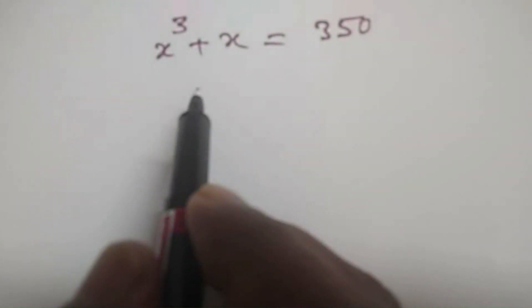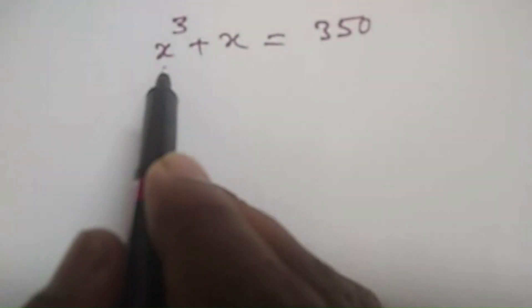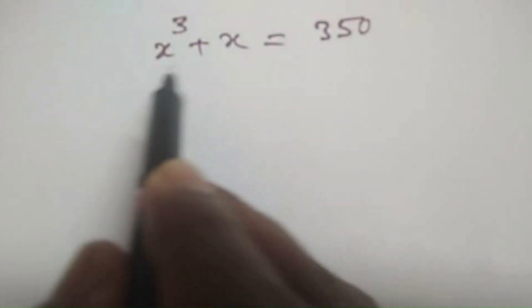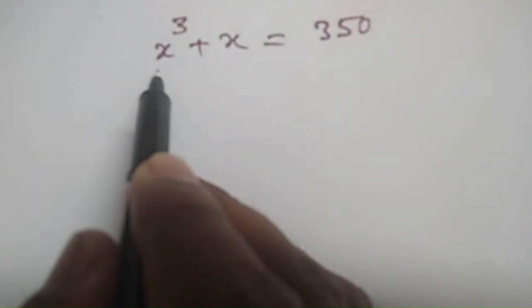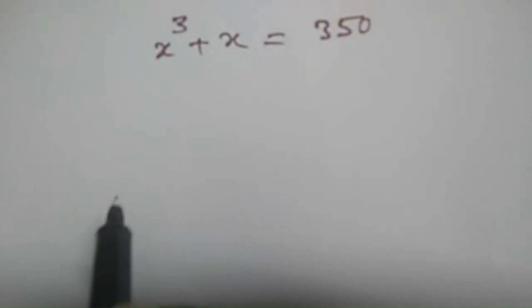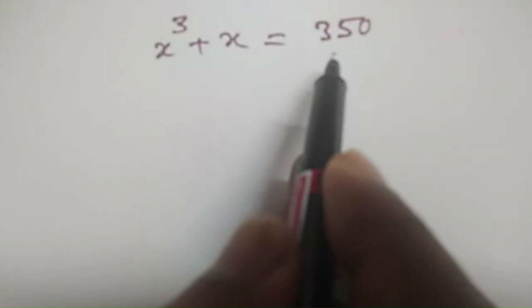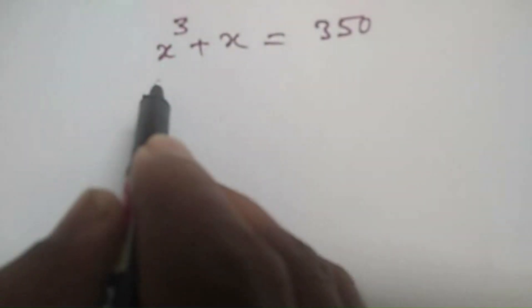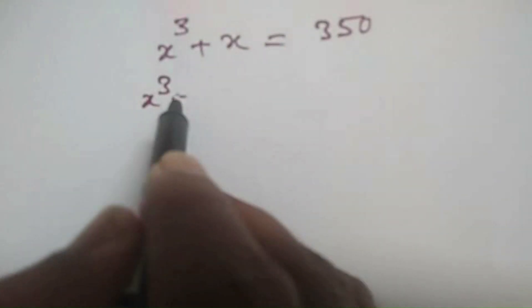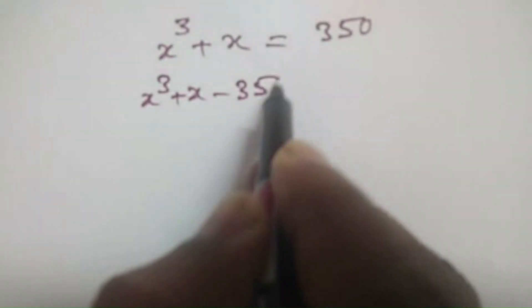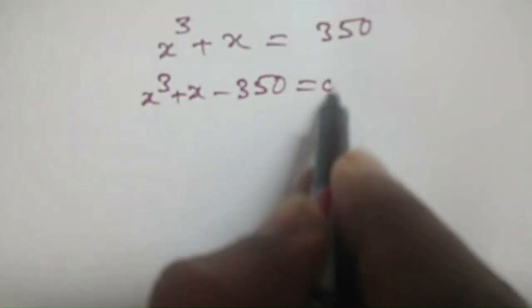Hello everyone. In the equation x cubed plus x is equal to 350, we need to find all possible values of x. Let's bring this 350 from the right side to the left side, which will become x cubed plus x minus 350 is equal to 0.